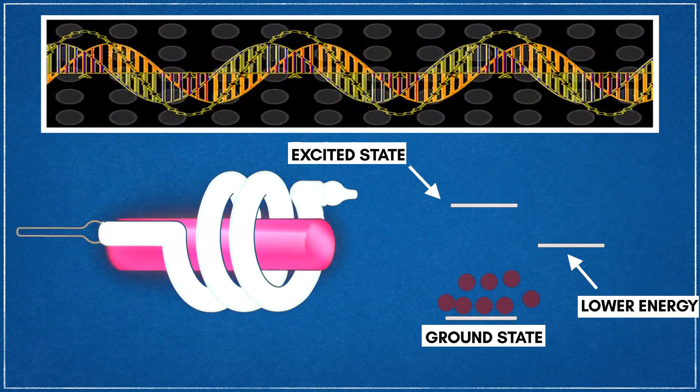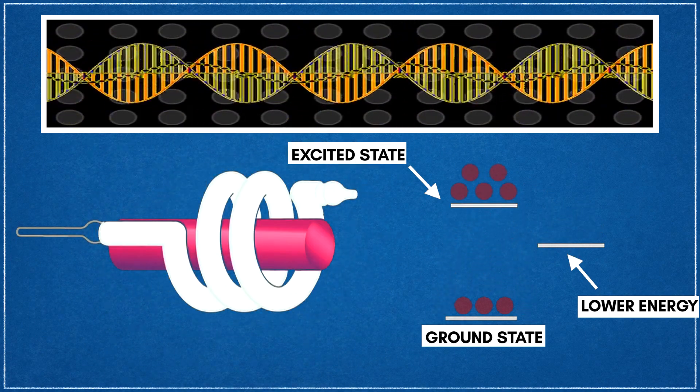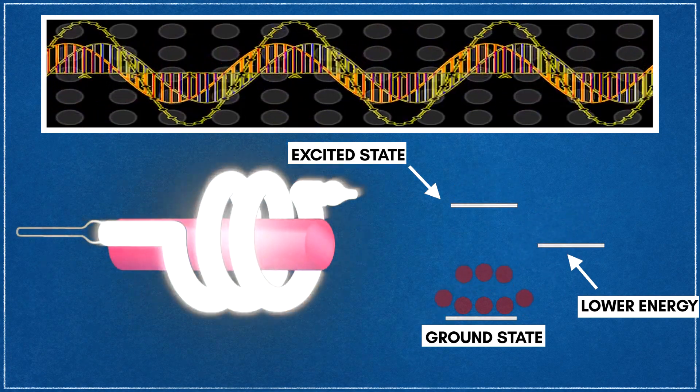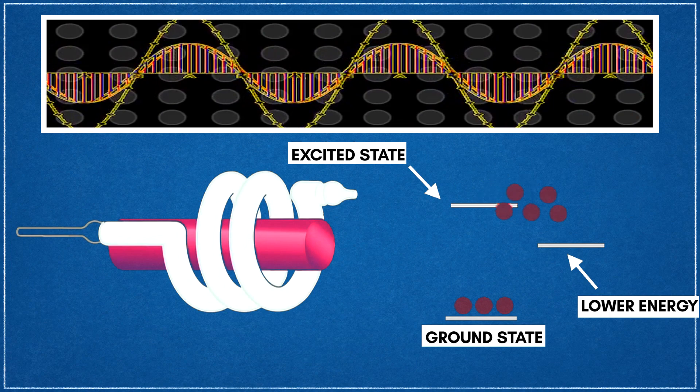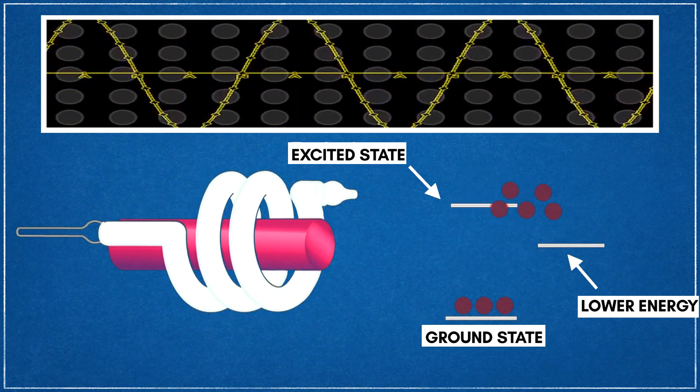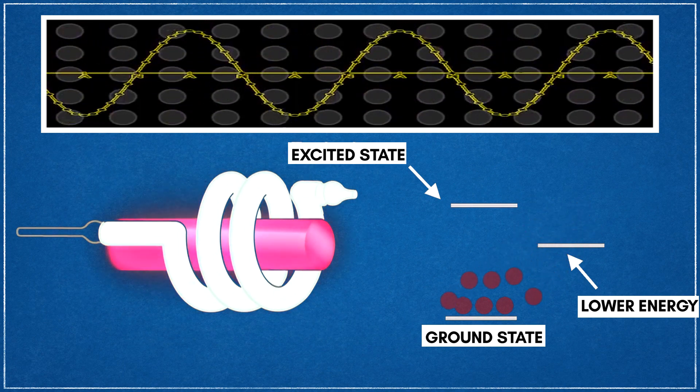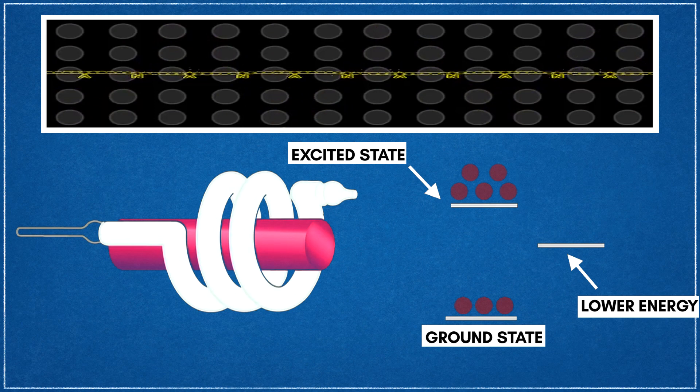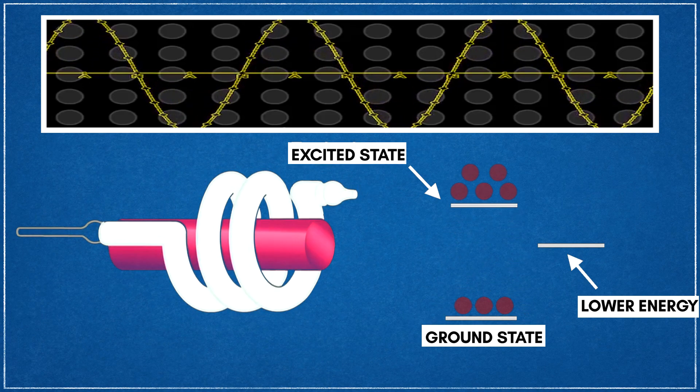We'll go into more detail on stimulated emission later in this video. The photon produced when an electron decays induces other excited electrons to simultaneously decay and release nearly identical photons. Thereafter, coherent light is created, which means that the crests and troughs of every light wave in the beam match up. At this point, we have coherent light, but not yet the other two properties needed for laser light.